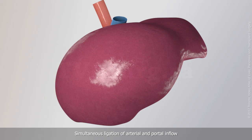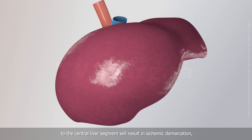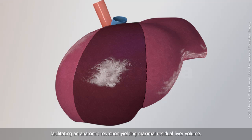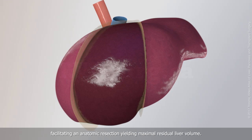Simultaneous ligation of arterial and portal inflow to the central liver segment will result in ischemic demarcation, facilitating an anatomic resection yielding maximal residual liver volume.